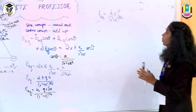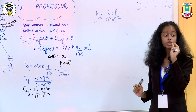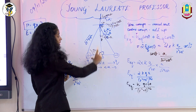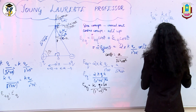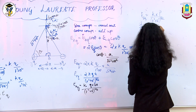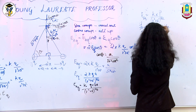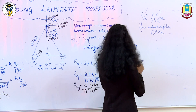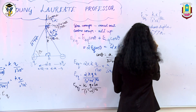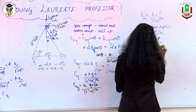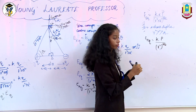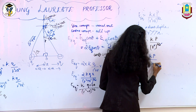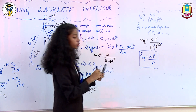For a short dipole, where r is very much greater than a, the distance a becomes negligible. So a² can be dropped from (r² + a²)^(3/2), which simplifies to (r²)^(3/2) = r³. Therefore, for a short dipole: E_equatorial = kP / r³. This is the final equation for the electric field intensity at an equatorial point.